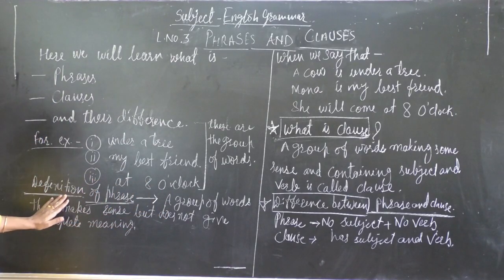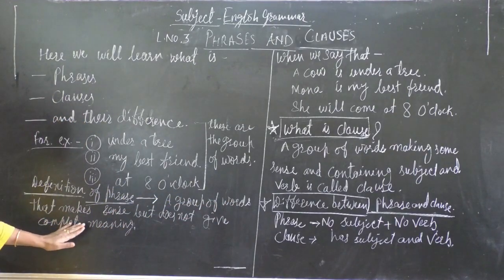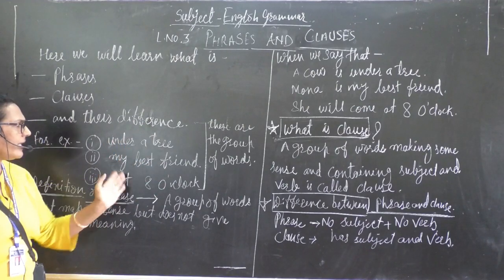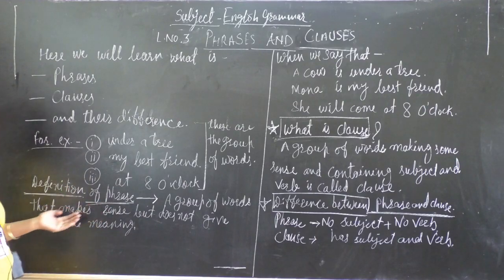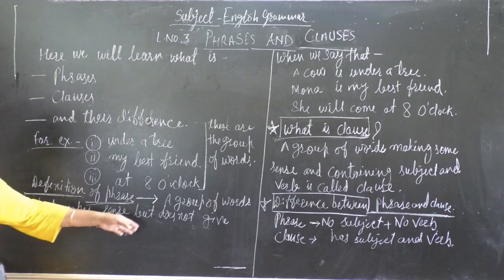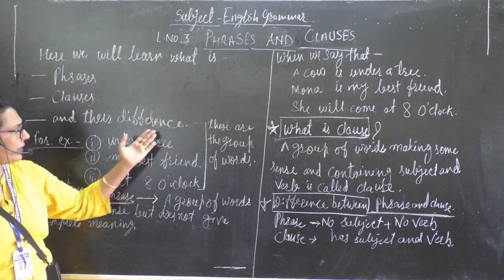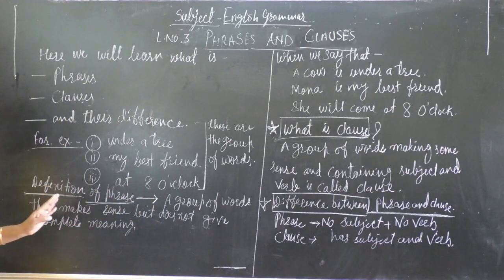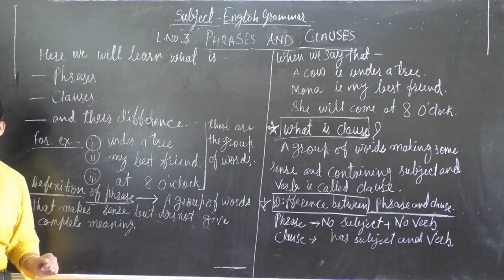What is a phrase? See, the definition of a phrase is a group of words that makes some sense. Something like under the tree, my best friend — they are making some sense. But they do not give a complete meaning. They are not giving any complete meaning.